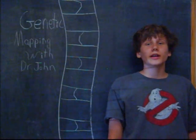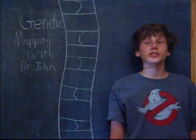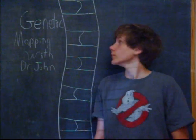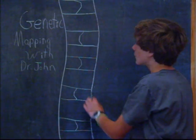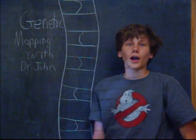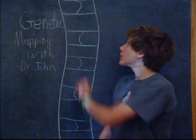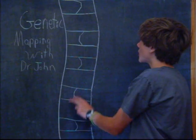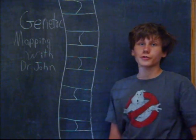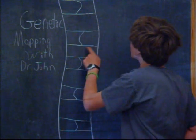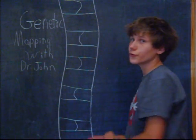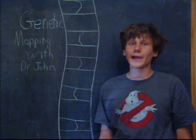Hi, I'm Dr. John, and I'm here to tell you about genetic mapping. Up here, we have a model of a strand of DNA. On the DNA, there are different nucleotides. Every three nucleotides make up the genetic code for a different amino acid.